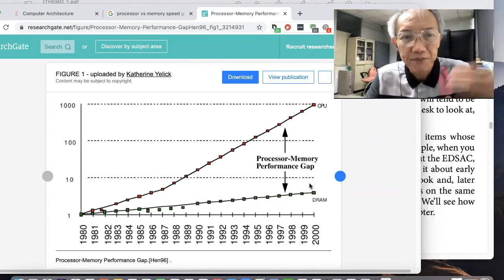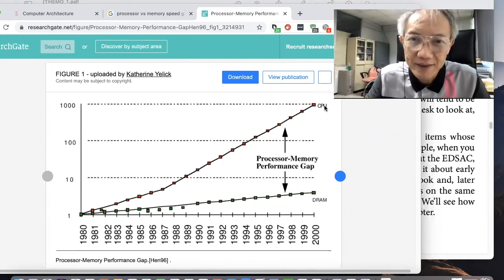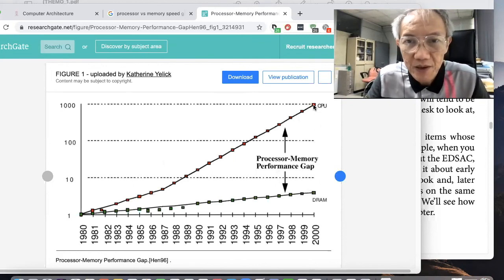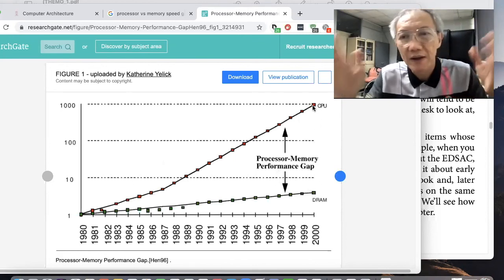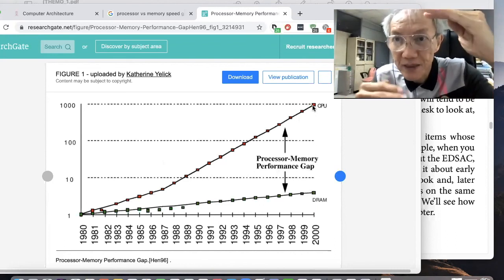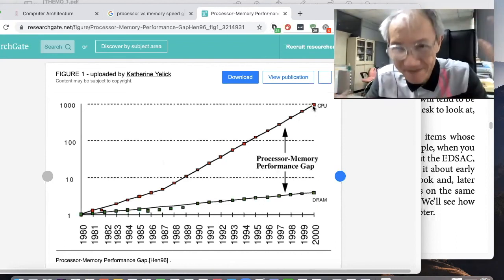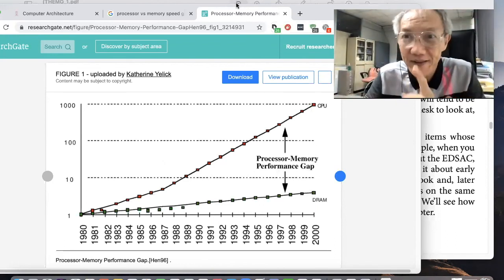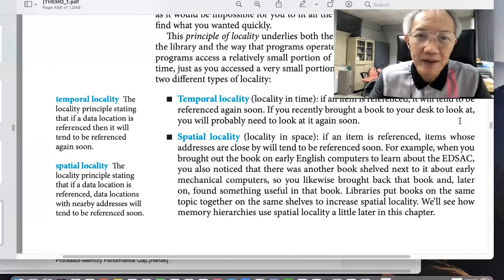So the gap, we can say, quite a lot. Now the gap, let's say DRAM here, maybe, let's say it's 10, and CPU here is 1000. So it's 100 times the speed different. So that is the first reason.